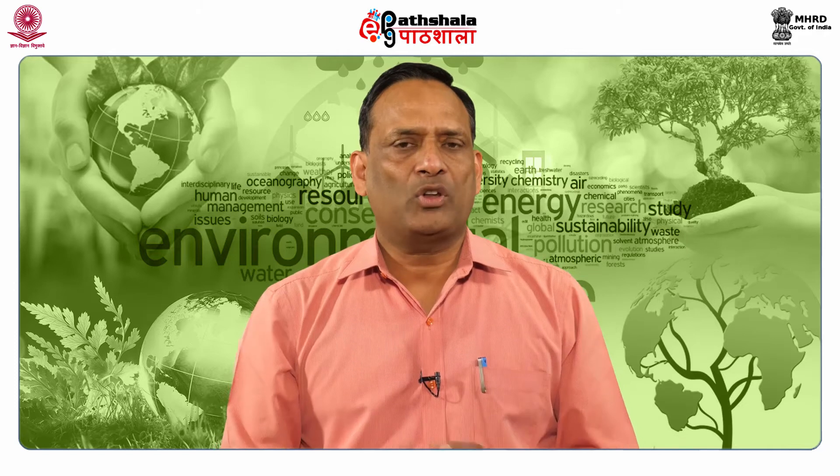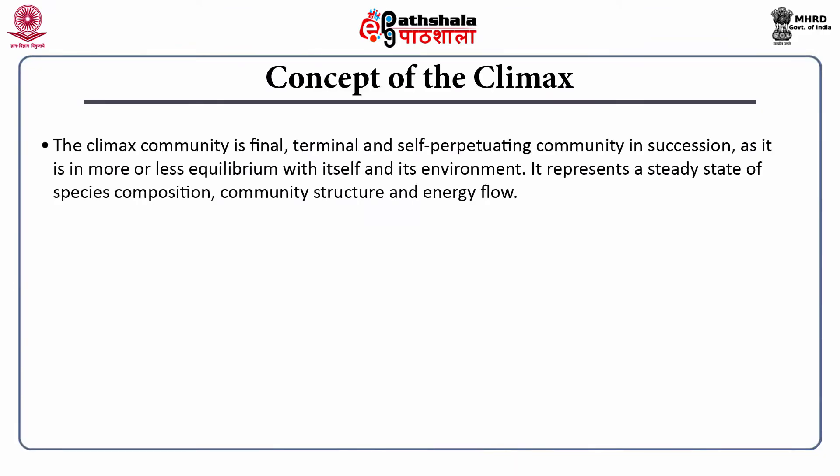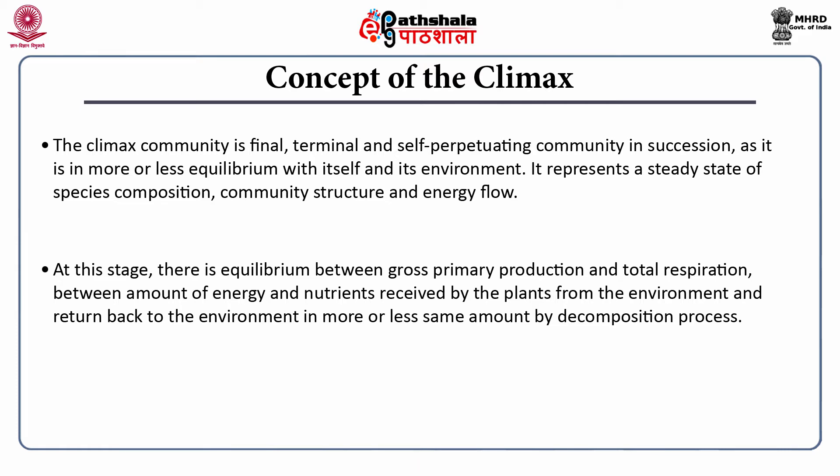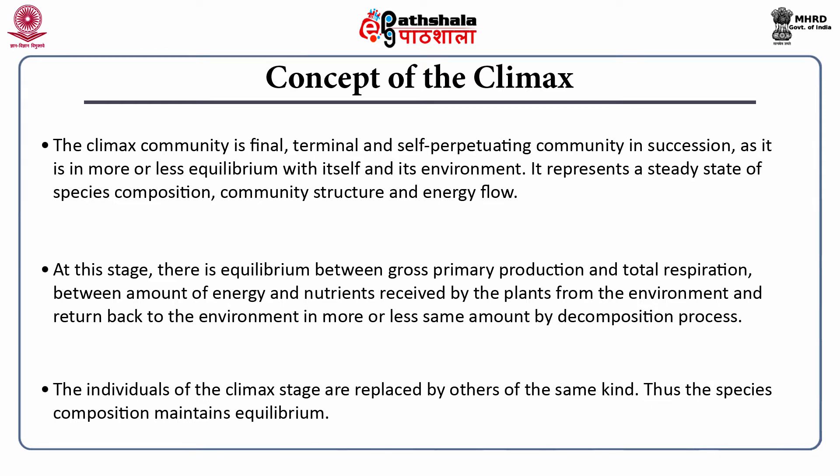Let me start with the concept of climax community. The climax community is a final, terminal and self-perpetuating community in succession, as it is a more or less equilibrium with itself and its environment. It represents a steady state of species composition, community structure and energy flow. At this stage there is equilibrium between gross primary production and total respiration, between the amount of energy and nutrients received by the plants from the environment and returned back to the environment in more or less the same amount by the decomposition process. The individuals of the climax stage are replaced by others of the same kind, and thus the species composition maintains equilibrium.